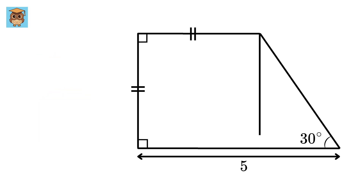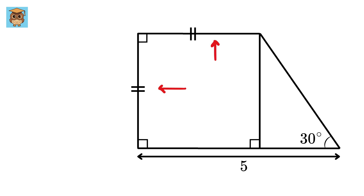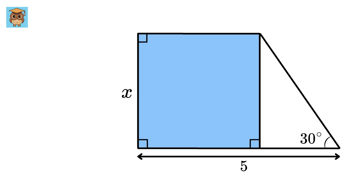First, let us draw this line, which will be perpendicular to this side, so this will be 90 degrees. Now, since all of these angles are 90 degrees and both of these lengths are the same, we can say that it will be a square. Now, let us label this as x, so all of them will be x as well.